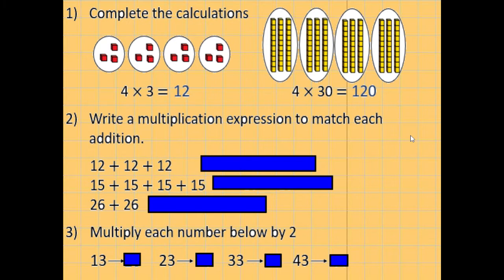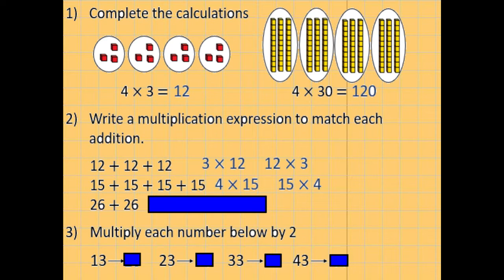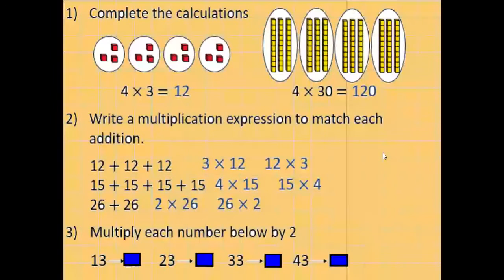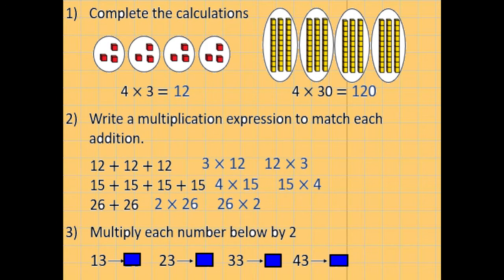Next one, write a multiplication expression to match each addition. It's just a fancy way of saying write the multiplication question that links with it. So we've got 12 add 12 add 12, and that could be written as 3 times 12 and 12 times 3. 15 add 15 add 15 add 15, as a multiplication we could use 4 times 15 or 15 times 4. And then 26 add 26, we could have it as 2 times 26 or 26 times 2.